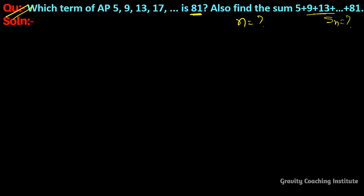Given: first term a = 5, and common difference d = 9 - 5 = 4.